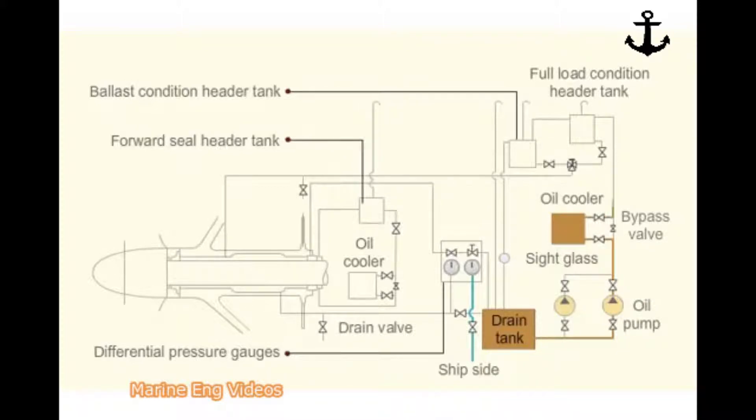The oil reaches the full load condition header tank from where it overflows to ballast condition header tank. Both the tanks have an outlet valve located at the tank bottom. Overflow from these tanks is led to the drain tank via a sight glass.